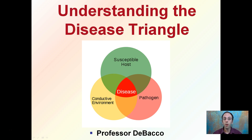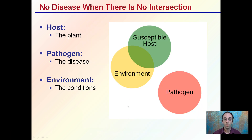Here I'm going to give you a brief overview of understanding the disease triangle that we see indicated here. We have three different components coming together to triangulate and form the occurrence of disease. The host, or susceptible host, is the plant in this case, and the pathogen is another word for the disease. The environment refers to the conditions that are occurring.